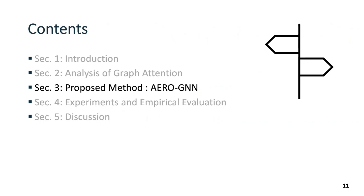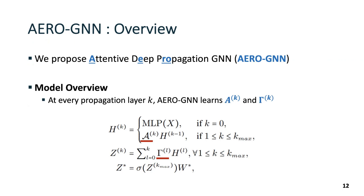The limitations motivate us to propose a new GNN architecture, ArrowGNN. Attentive depropagation GNN, ArrowGNN in short, learns edge attention alpha k and hop attention gamma k at every propagation layer k. It first transforms input feature x with an MLP and then propagates feature h with edge attention alpha k and hop attention gamma k. To learn the final node representation z k, a classifier layer makes a final prediction z star.